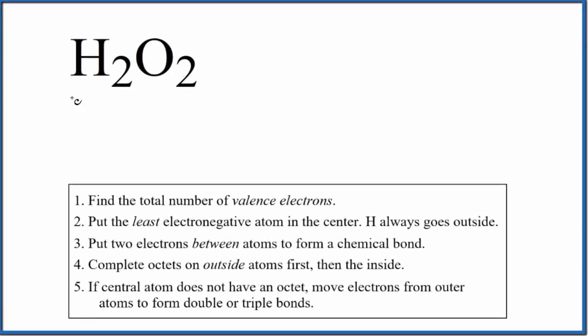Let's draw the Lewis structure for H2O2. This is hydrogen peroxide. So the first thing with Lewis structures like hydrogen peroxide here, we count the total number of valence electrons. We can use the periodic table to help us.